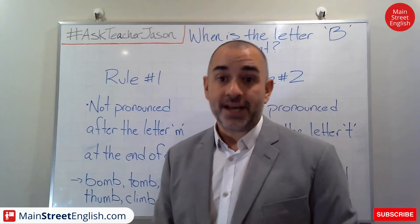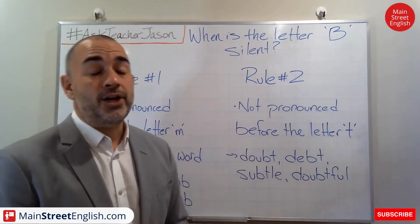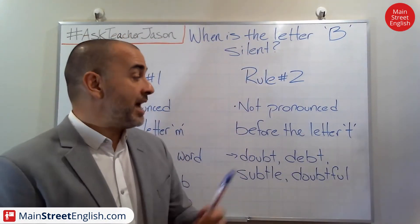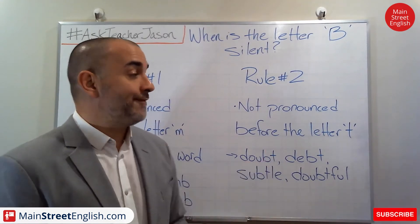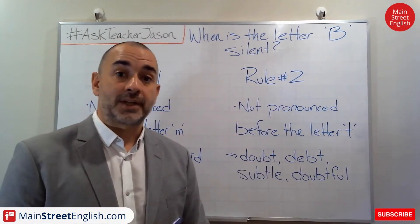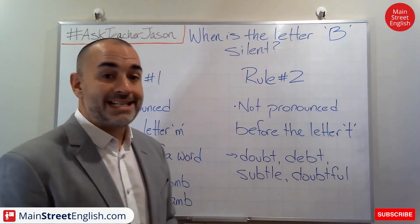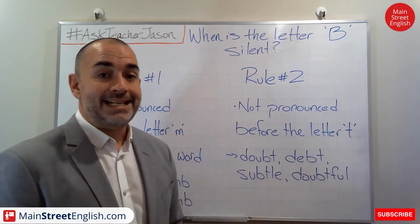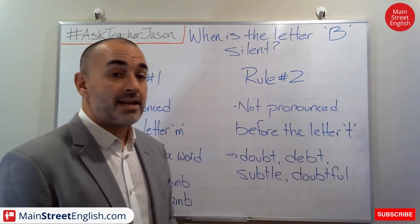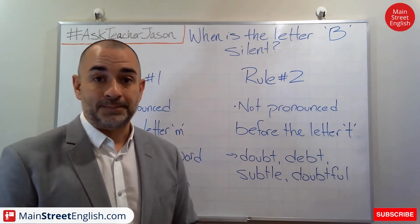The second rule you should remember is the letter B is not pronounced before the letter T. For example: doubt, debt, subtle, doubtful.